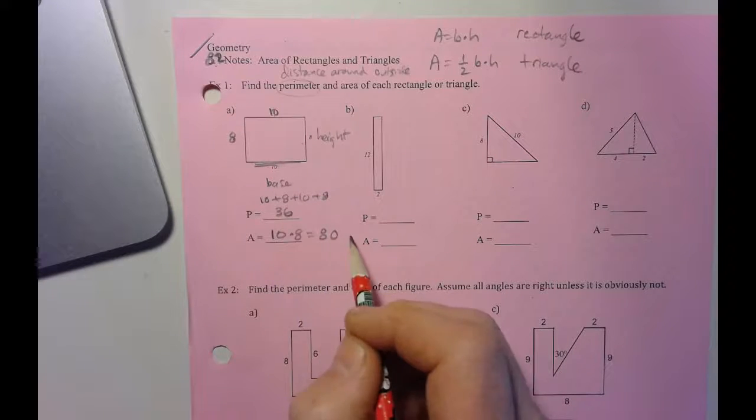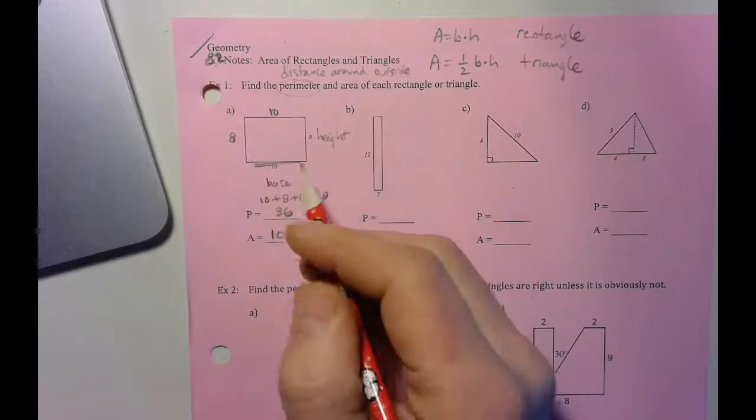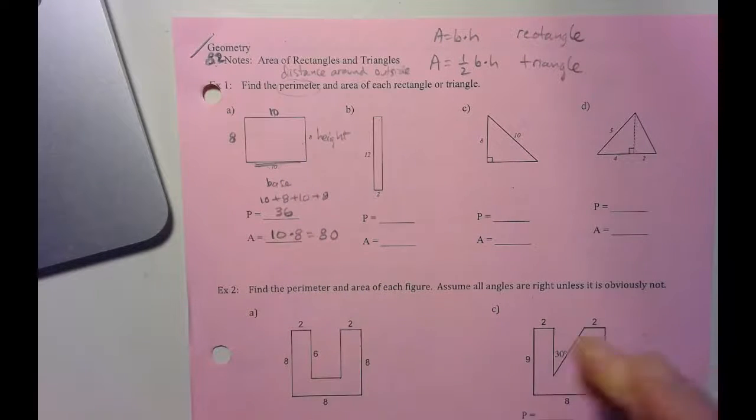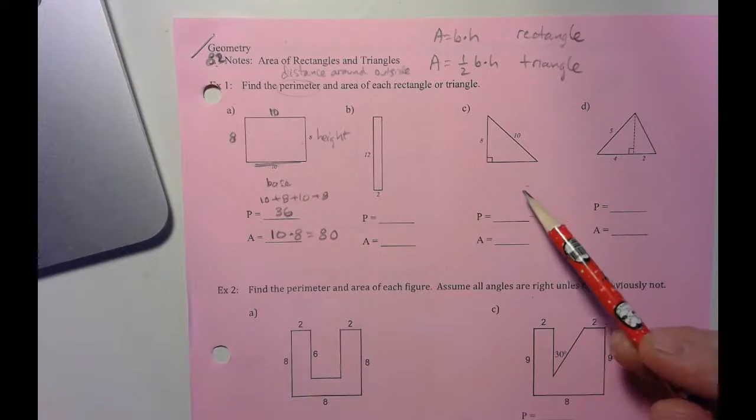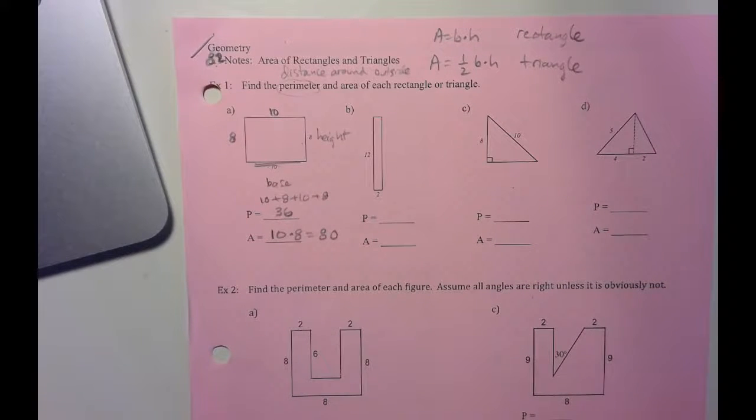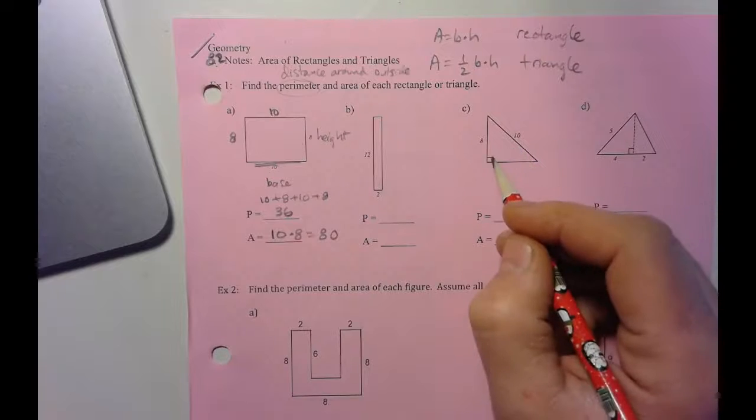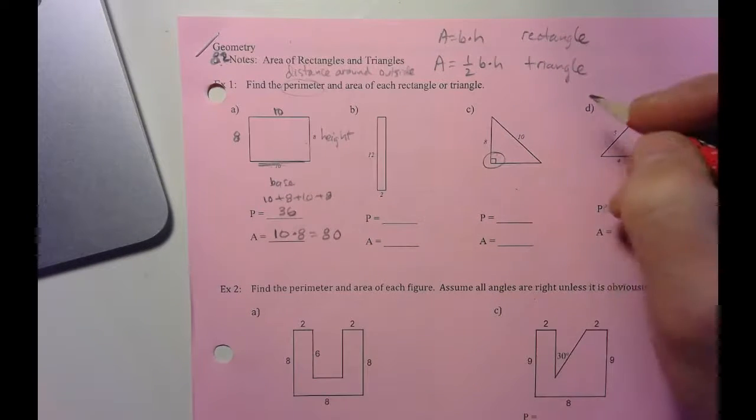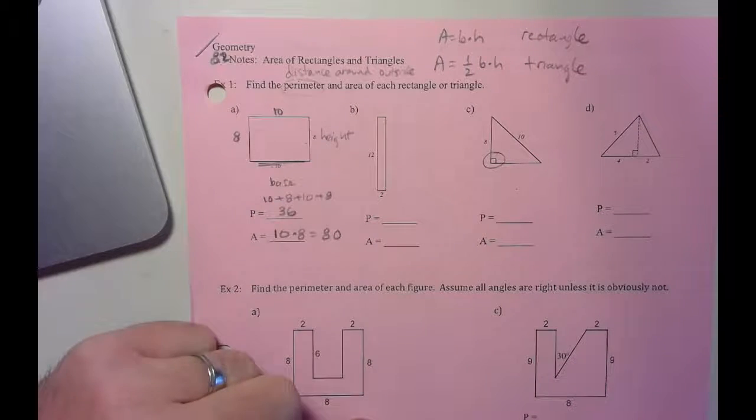There's no units there, so we don't need to worry about putting units there. But if this had feet, and that was feet, I would put this is 36 feet, and this is 36 square feet. And that's just needed if you have units there. So B is going to be the same one, so you should try that on your own. And then we have C right here. For this one, this right angle tells us, you know, remember that base and height are perpendicular to each other. So we'll put that little note for ourself.